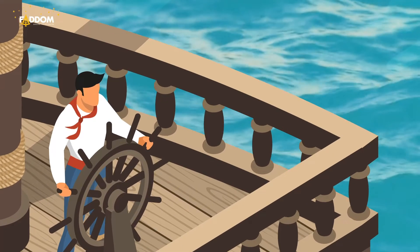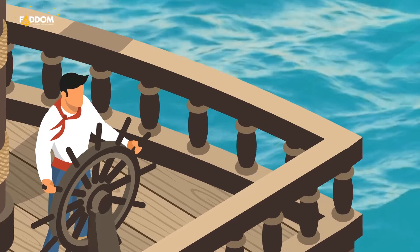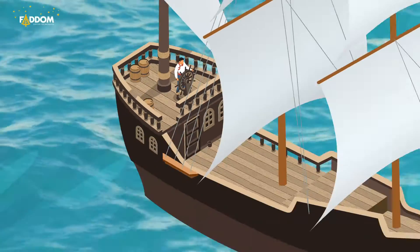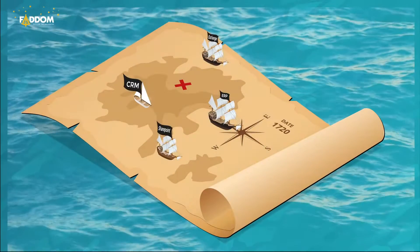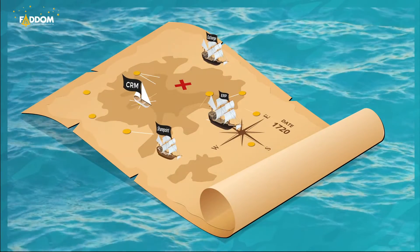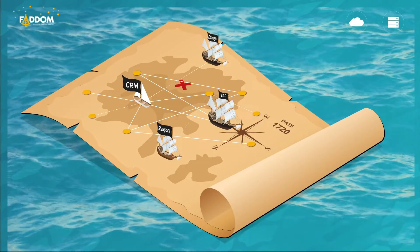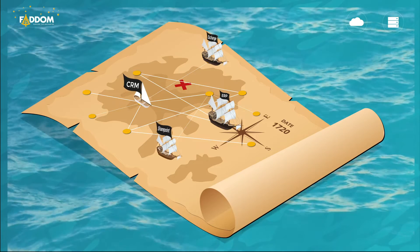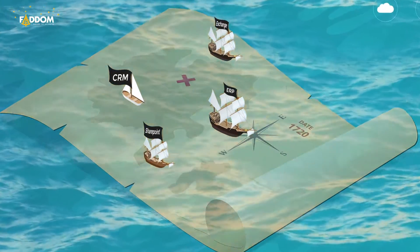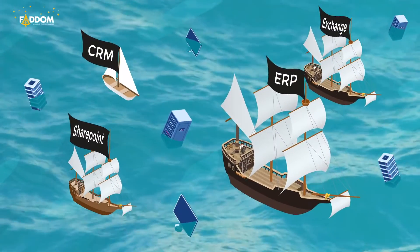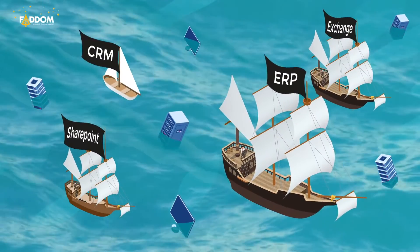FADM's Hybrid Application Dependency Mapping creates a real-time infrastructure map of your entire on-premise and cloud environments, with everything grouped by business application.